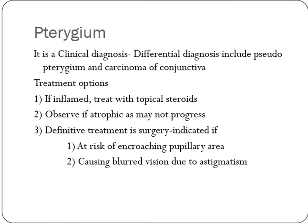The most commonly done thing is to leave it, because pterygium tends to become atrophic over time and may not progress to cause vision problems. If the patient is asymptomatic, the best thing is to leave it, avoid UV light exposure with sunglasses, use lubricating drops for discomfort, and treat inflammation and redness with topical steroids for a few days.